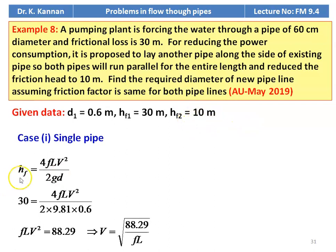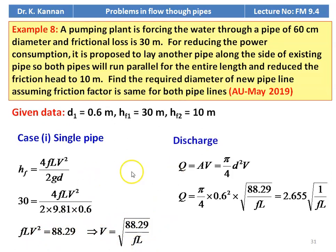For the single pipe: H = 4FLV²/2GD; substituting H = 30 m: 4FL × V² / (2 × 9.81 × 0.6) = 30. Simplifying: FLV² = 88.29, so V = √(88.29 / FL). The discharge for the single pipeline: Q = A × V = π/4 × 0.6² × √(88.29/FL) = 2.655 × √(1/FL).